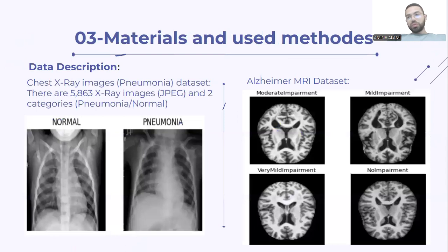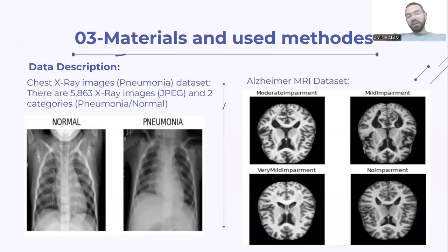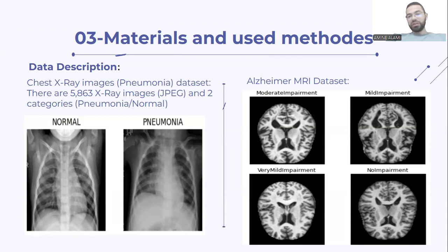This is the dataset used. The first dataset is the chest X-ray pneumonia dataset. It has two categories: pneumonia or normal. The second is the Alzheimer's MRI dataset. It contains four categories: moderate impairment, mild impairment, very mild impairment, and no impairment.